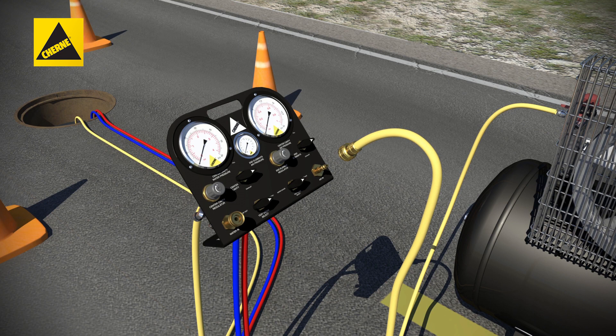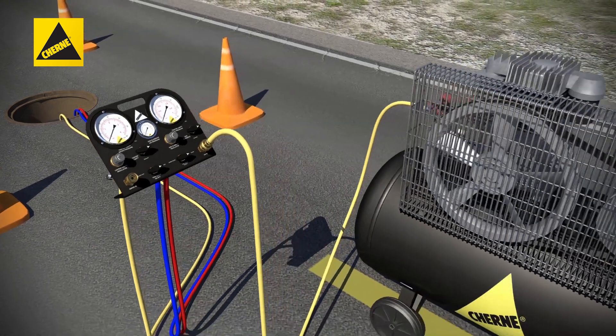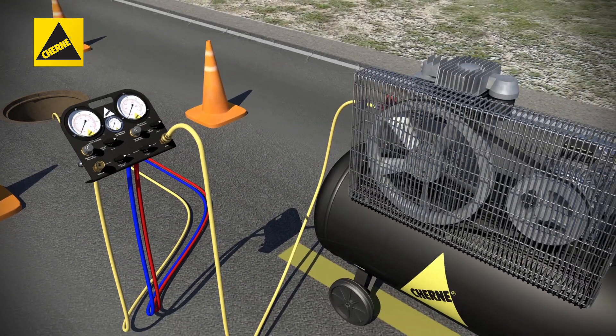Attach the air hose to the air in connection on the control panel and turn the air compressor on.